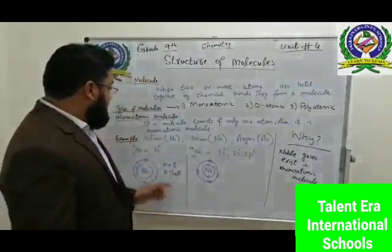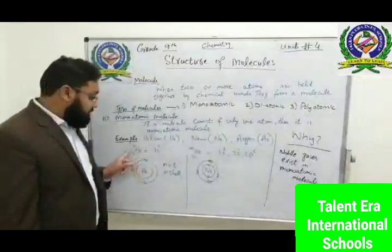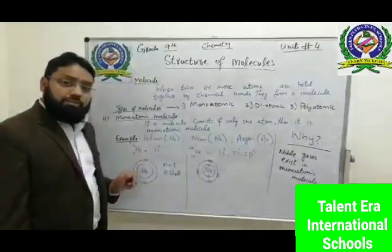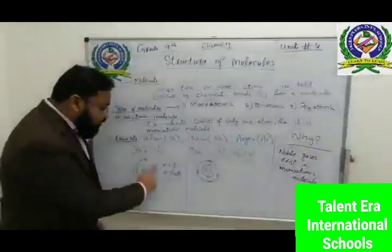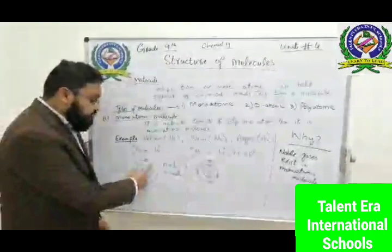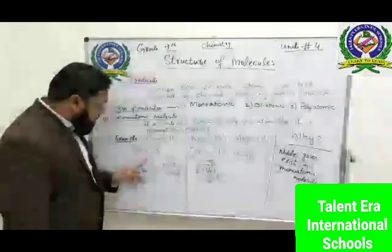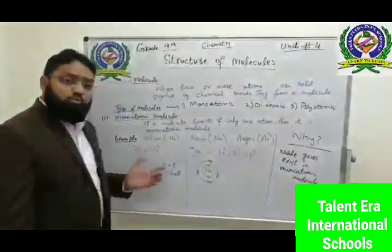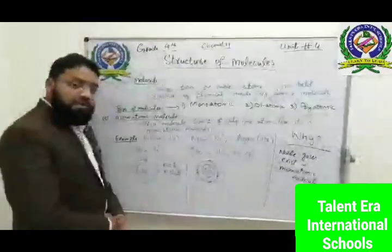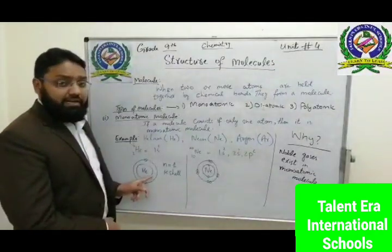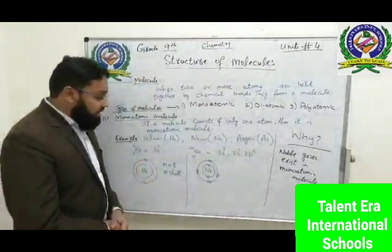If we see the structure of helium: the atomic number of helium is 2 and atomic mass is 4, so its electronic configuration is 1s2. If I draw the atomic structure of helium, you can see there is only one shell, and in the first shell we know only two electrons can be accommodated. After filling these two electrons, helium has no more space, so it is completely filled and unable to react with other atoms. That's why helium exists in monoatomic form.